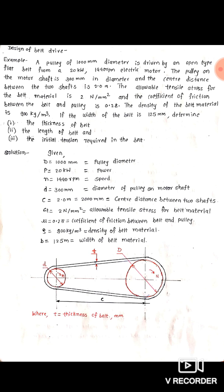If the width of the belt is 125 mm, determine: first, the thickness of belt; second, the length of the belt; and third, the initial tension required in the belt. Now we solve this numerical — first we point out the given data.